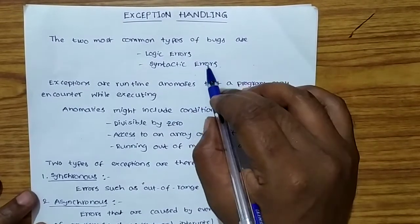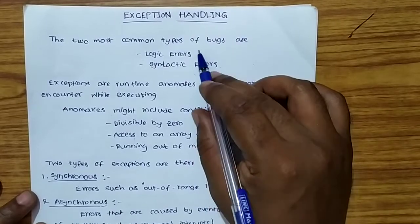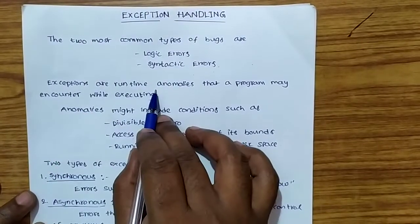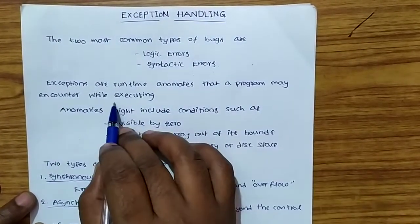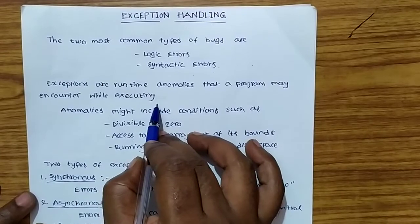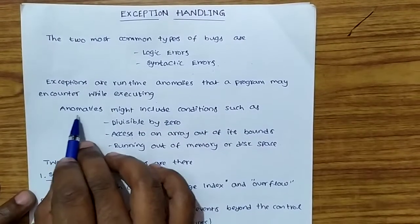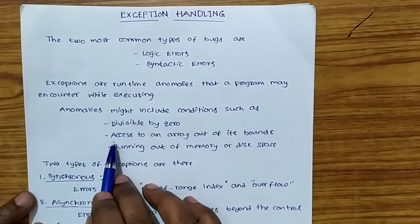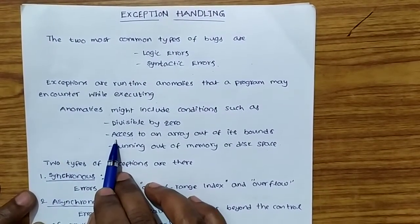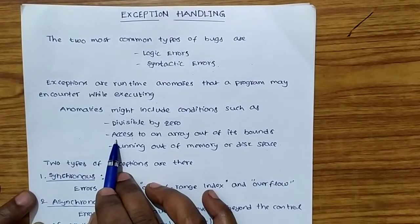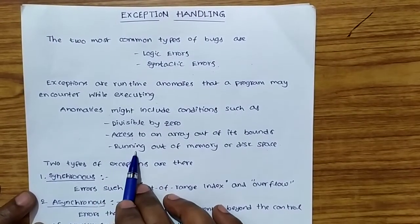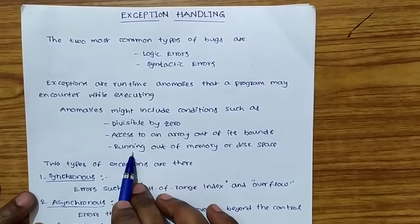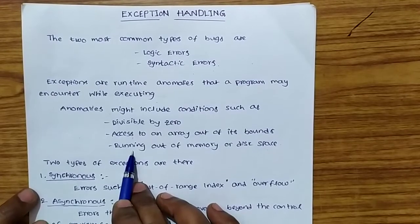These are the common bugs while we are running or compiling a program. Exceptions are runtime anomalies that a program may encounter while executing. Anomalies means unusual conditions, such as division by zero, accessing an array out of its bounds or range, and running out of memory or disk space.